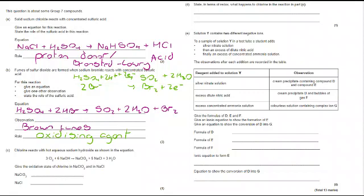Let's move on to part C. We've got here chlorine reacting with hot aqueous sodium hydroxide, and we've got the equation for what's happening provided. What is the oxidation state of Cl in NaClO3, and what is it in NaCl?